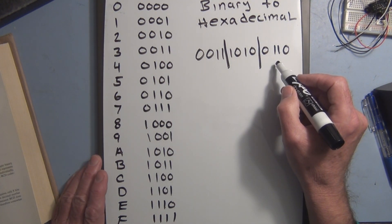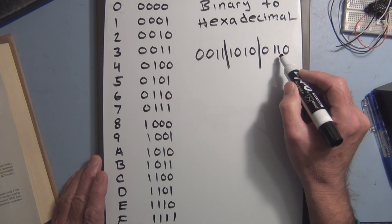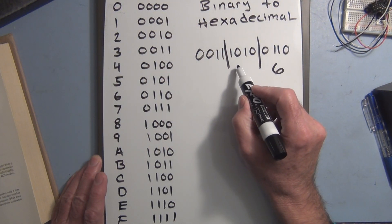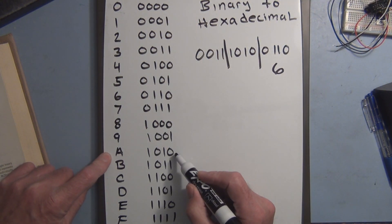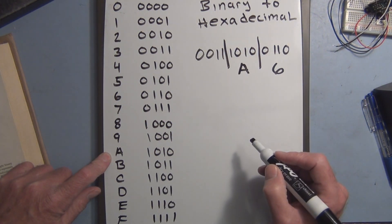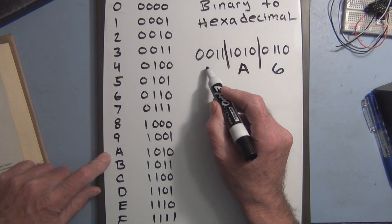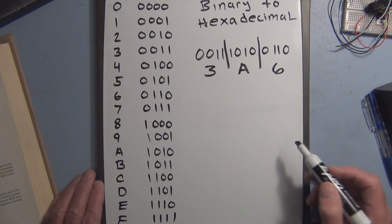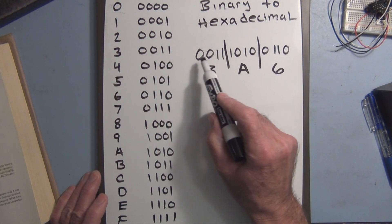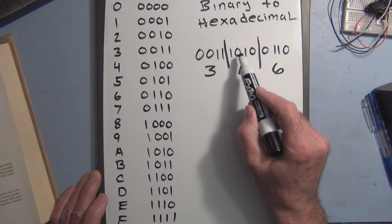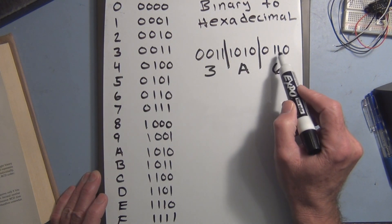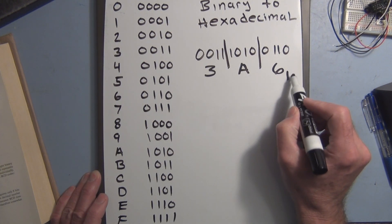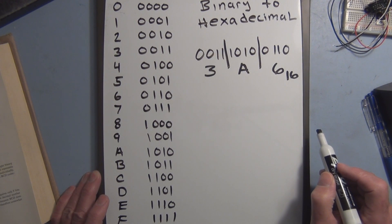So this number here is 0110, which is 6. This here is 10. But in hexadecimal, that is A. And this here is 3. Equivalent in hexadecimal. So this binary number, 001110100110, is equivalent to 3A6, base of 16, hexadecimal.